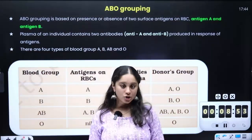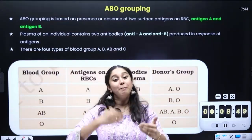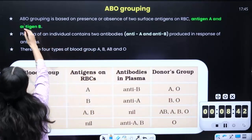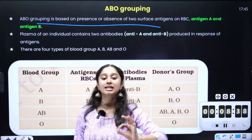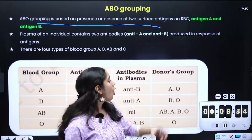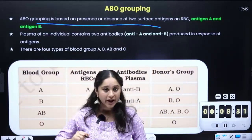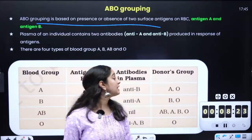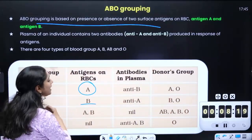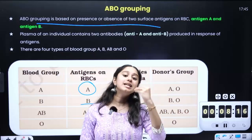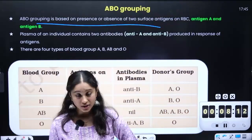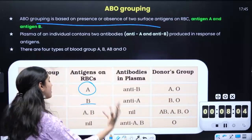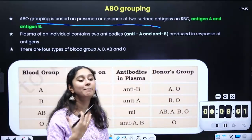ABO blood grouping — we know that A, B, O, or AB type. We say that we have a particular surface antigen on red blood cells. There are two antigens: antigen A and antigen B. If you have antigen A, that is blood group A. If you have antigen B, that is blood group B. We are learning co-dominance — if there is a gene for antigen A as well as antigen B, it will get expressed as AB. So AB is a blood group.